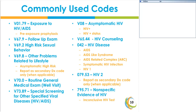The HIV counseling code is V65.44, reported when the provider feels it's necessary to counsel a patient. Code 042 is used for HIV disease or HIV infection. Synonyms for 042 include AIDS, AIDS-like syndrome, AIDS-related complex (ARC), symptomatic HIV infection, and HIV-1.